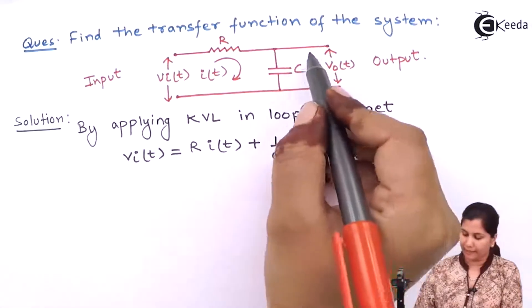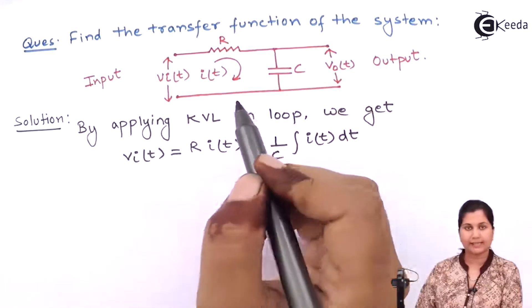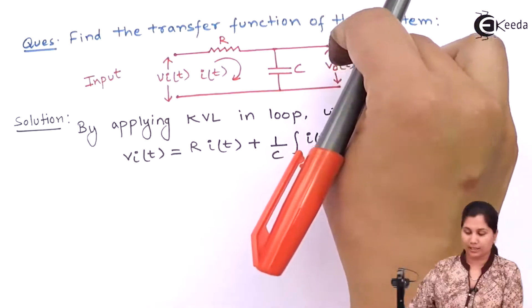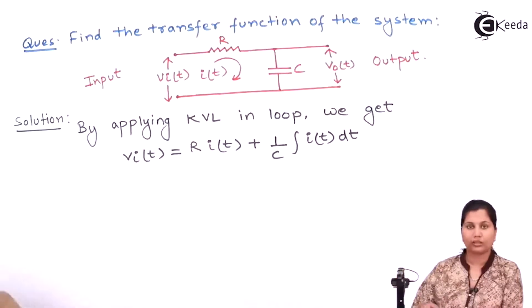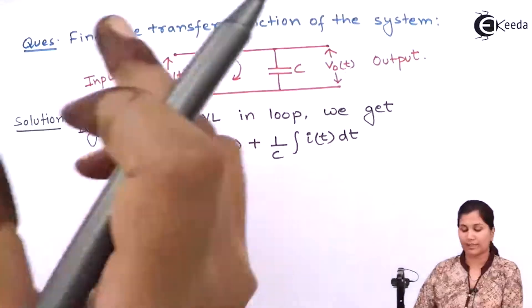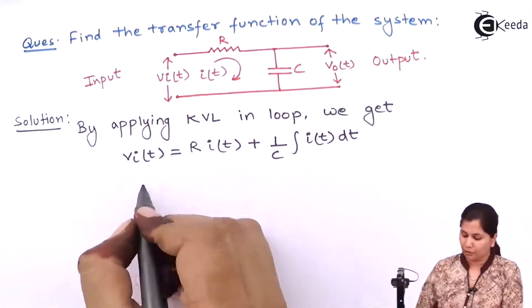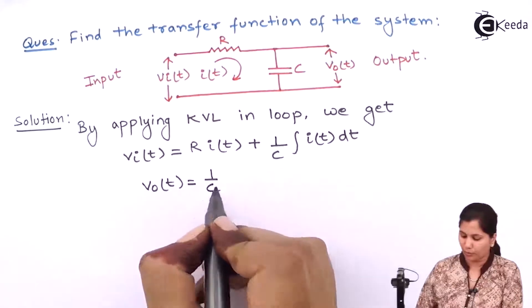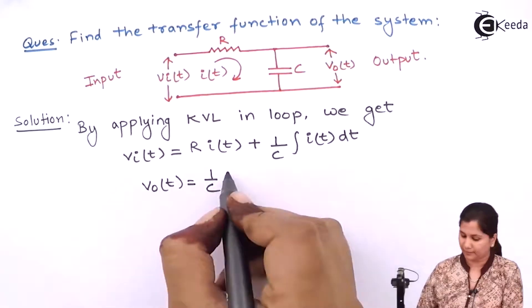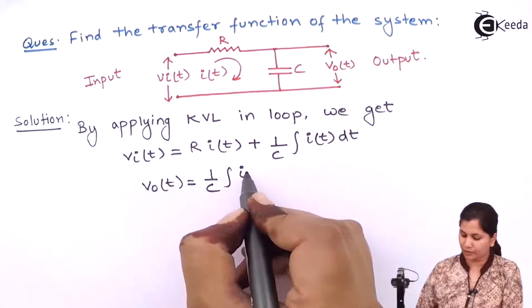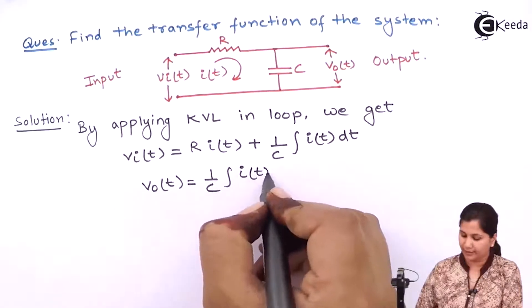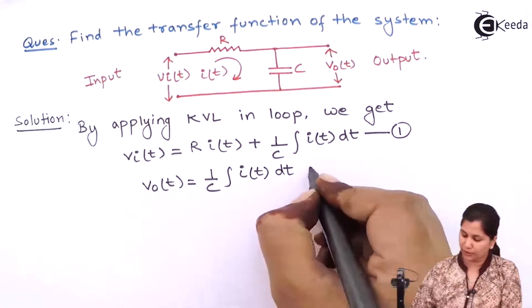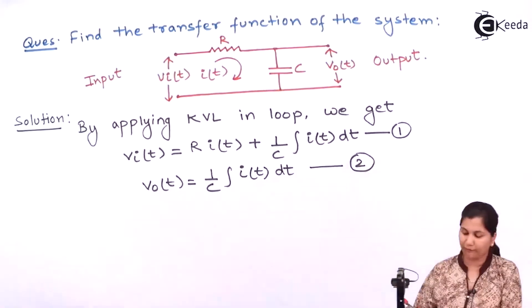Now, if we apply KVL in the second loop, then Vo(t) will be equal to the voltage drop across the capacitor. So Vo(t) = (1/C)·∫i(t)dt. These are the two equations which we have obtained.